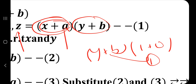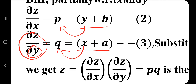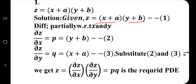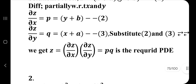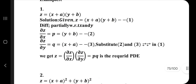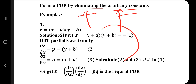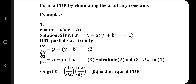So differentiating z partially with respect to x gives p = (y + b). Similarly, differentiating with respect to y gives q = (x + a). The original equation z = (x + a)(y + b) becomes z = p × q, where p = ∂z/∂x and q = ∂z/∂y. The arbitrary constants a and b have been eliminated, and z = pq is the required PDE.